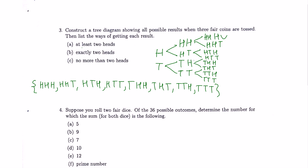Now let's answer the questions. How many ways can we get at least two heads? At least two heads means two heads or three heads. So we count outcomes with two heads and also three heads — that gives us one, two, three, four.